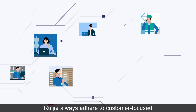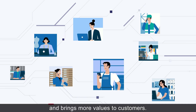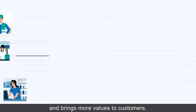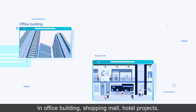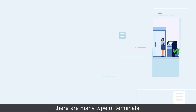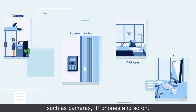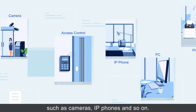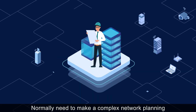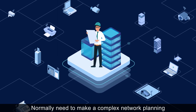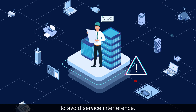RAGIA always adheres to customer-focused values and brings more value to customers. In office buildings, shopping malls, and hotel projects, there are many types of terminals such as cameras, IP phones, and so on. Normally, a complex network plan is needed to avoid service interference.